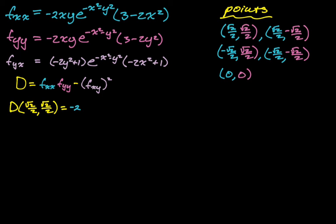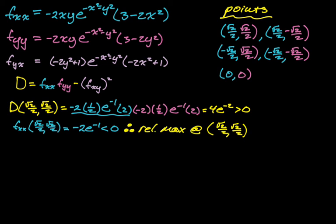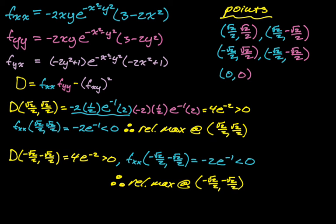At (√2/2, √2/2): partial_xx = −2·(1/2)·e^(−1)·2 = −2e^(−1). Partial_yy is the same by symmetry. Partial_xy = 0 again. So D = (−2e^(−1))·(−2e^(−1)) − 0 = 4e^(−2) > 0. Since partial_xx = −2e^(−1) < 0, the trace is concave down — relative maximum. The work for (−√2/2, −√2/2) is identical, giving the same conclusion: relative maximum.